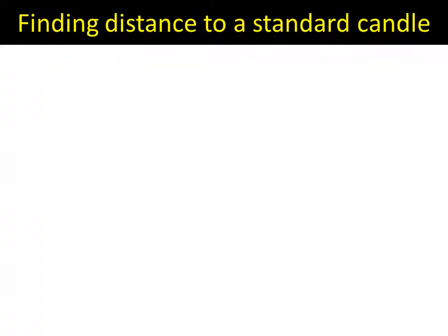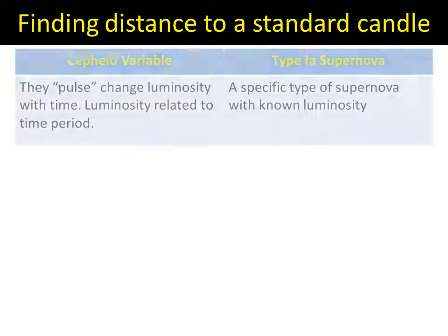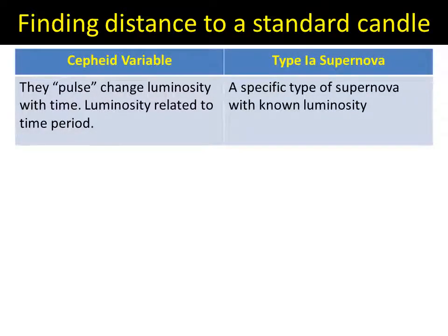There are two main types of standard candles that we need to know about — there are more, but these are the two main types. The first ones are Cepheid variables. These are stars that appear bright and then dim, then bright and dim — so they pulse. Their luminosity, the amount of energy they throw out, changes because they're unable to get to a stable position.